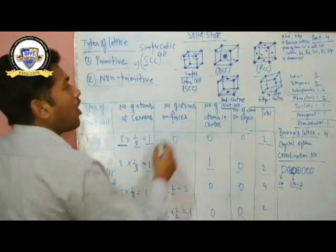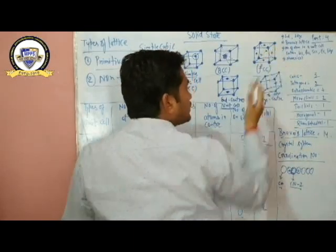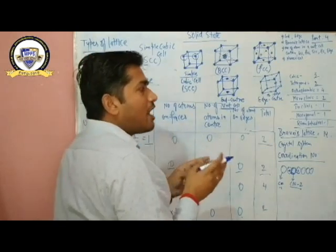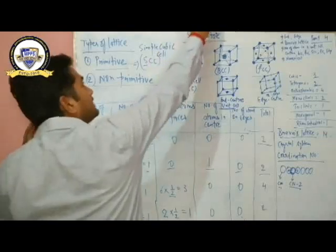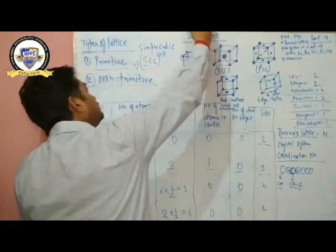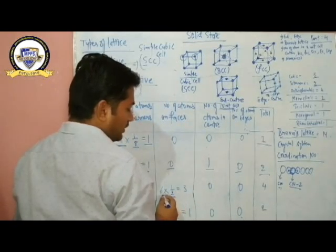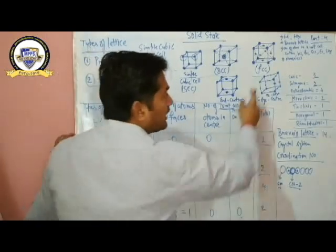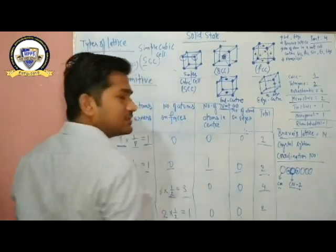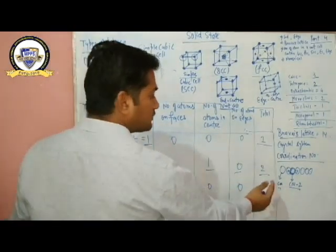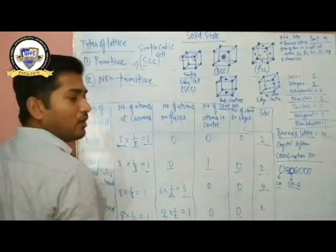For face-centered cubic (FCC), atoms are present at the corners as well as on six faces. Each face atom contributes 1/2 because half is shared with another unit cell. So 6 × 1/2 = 3 from faces, plus 1 from corners. There are no body-center or edge atoms. Total number of atoms in FCC = 1 + 3 = 4.